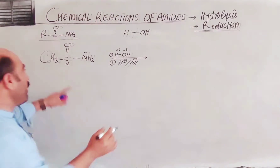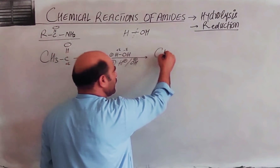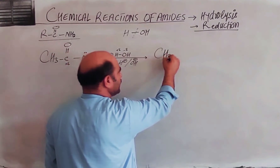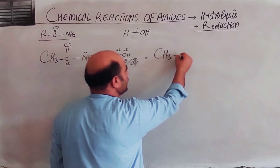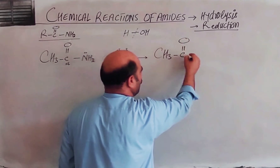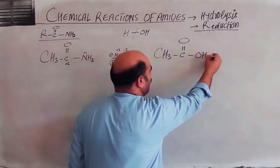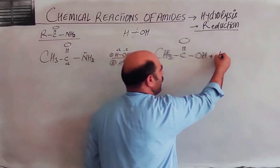This mechanism can also be used to convert amides into carboxylic acids. For example, CH3-C(=O)-NH2 plus water gives CH3-COOH plus ammonia. That is the overall reaction for amide hydrolysis.